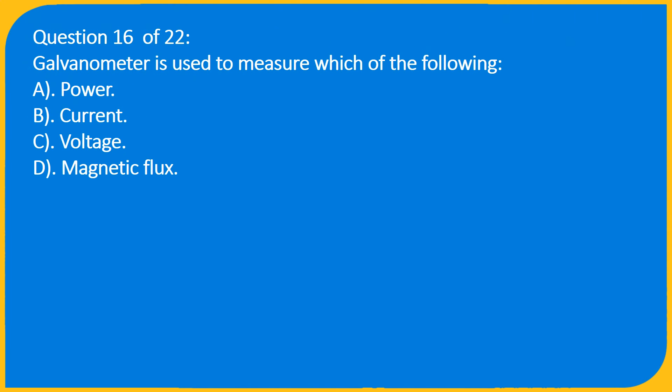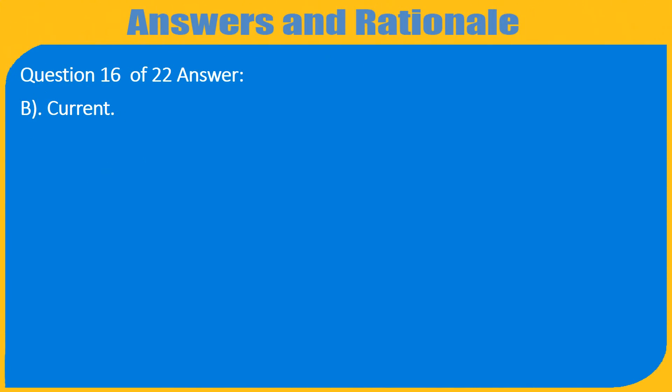Question 16 of 22: A galvanometer is used to measure which of the following? A. Power, B. Current, C. Voltage, D. Magnetic flux. Answer: B. Current.